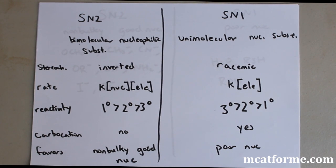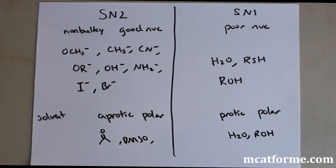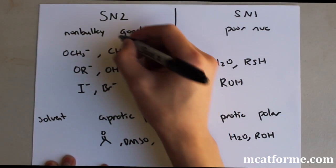In terms of conditions, what are the conditions that are favored? It's a non-bulky good nucleophile for SN2 and SN1 is a poor nucleophile. So what exactly are all these non-bulky good nucleophile and poor nucleophile? This is a very generalized way of memorizing this, but for the MCAT, it's what's going to help you.